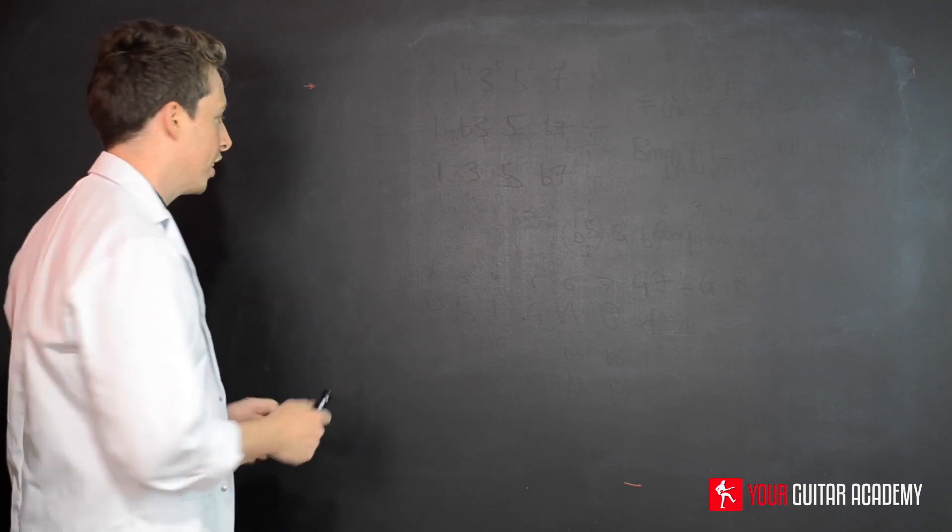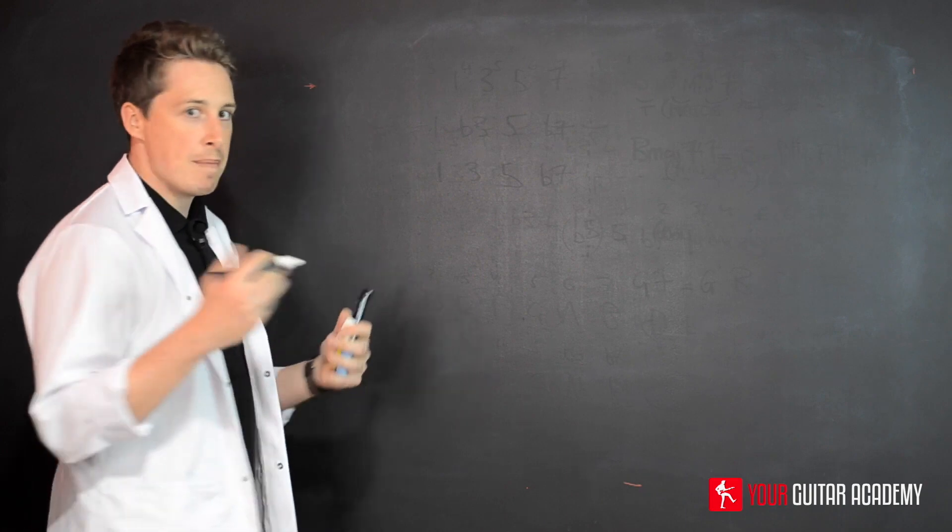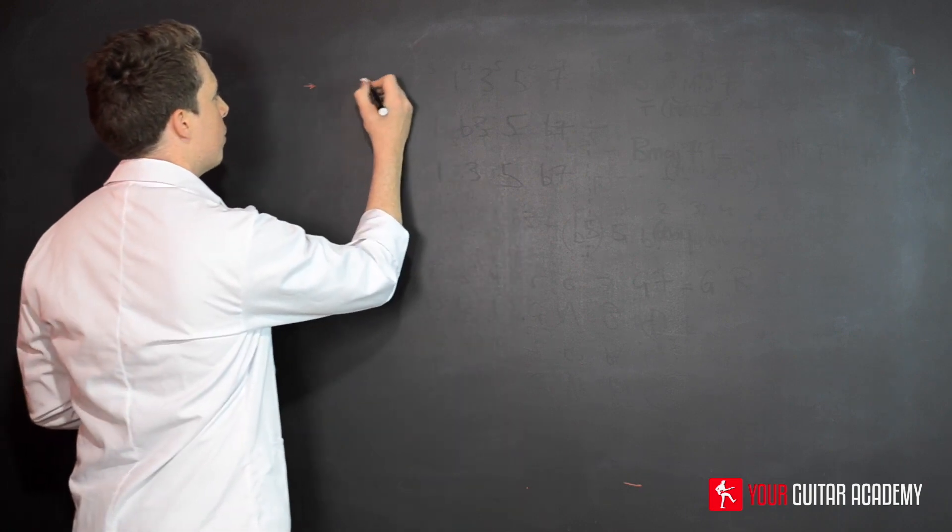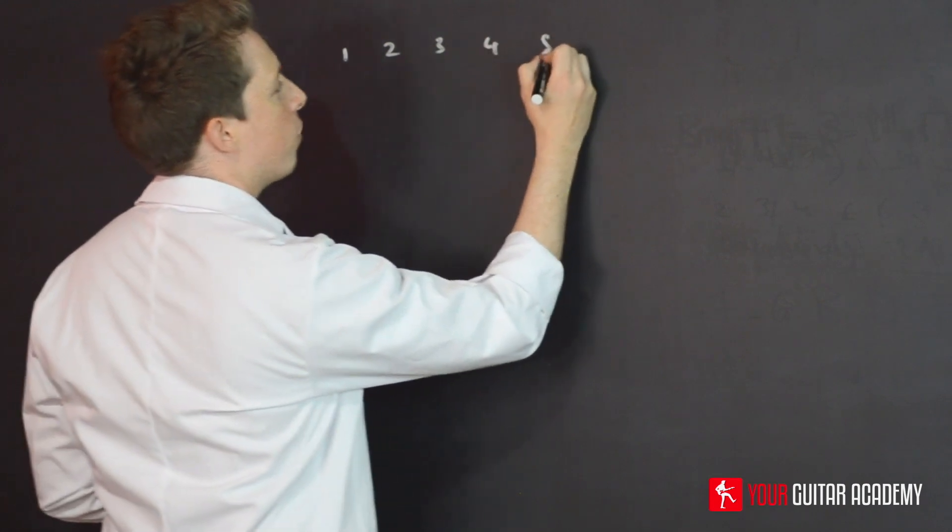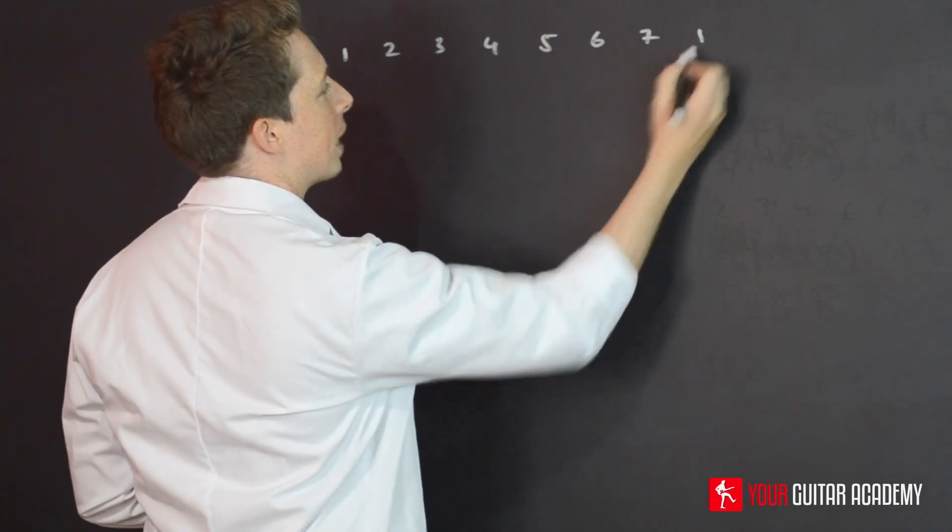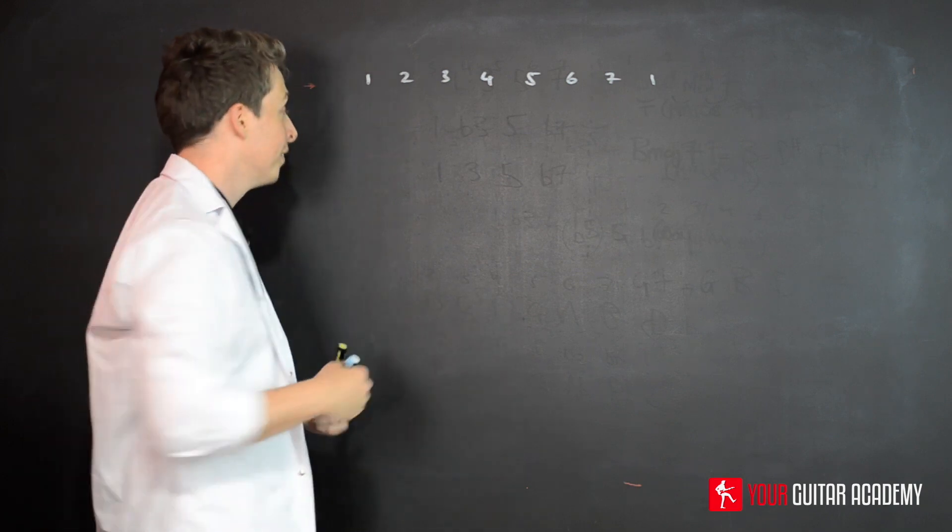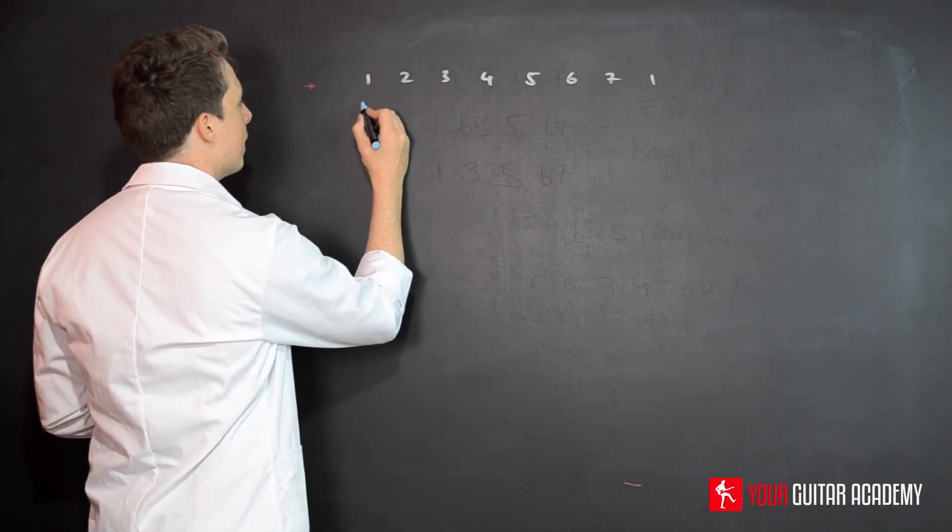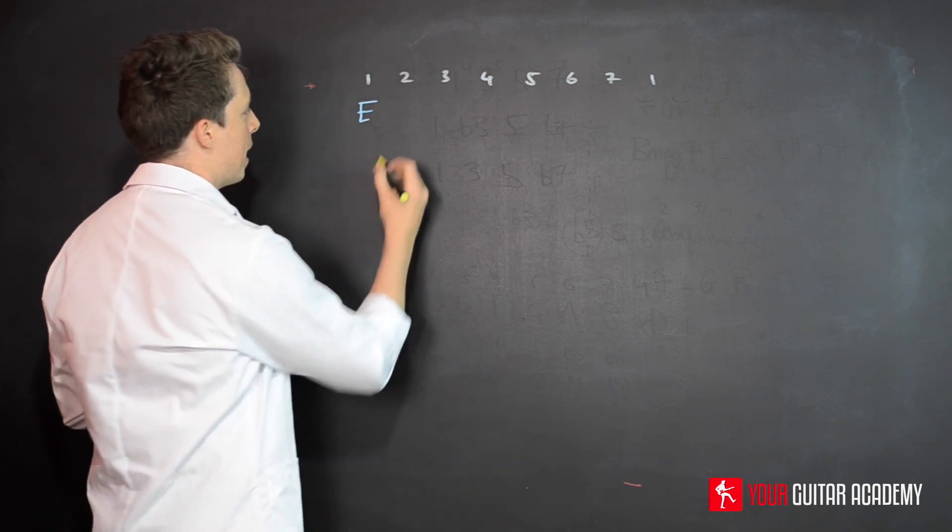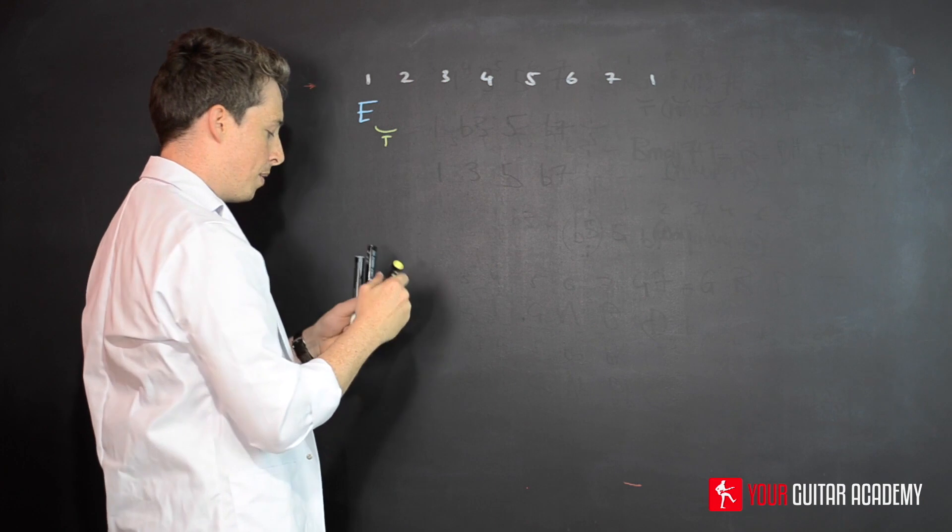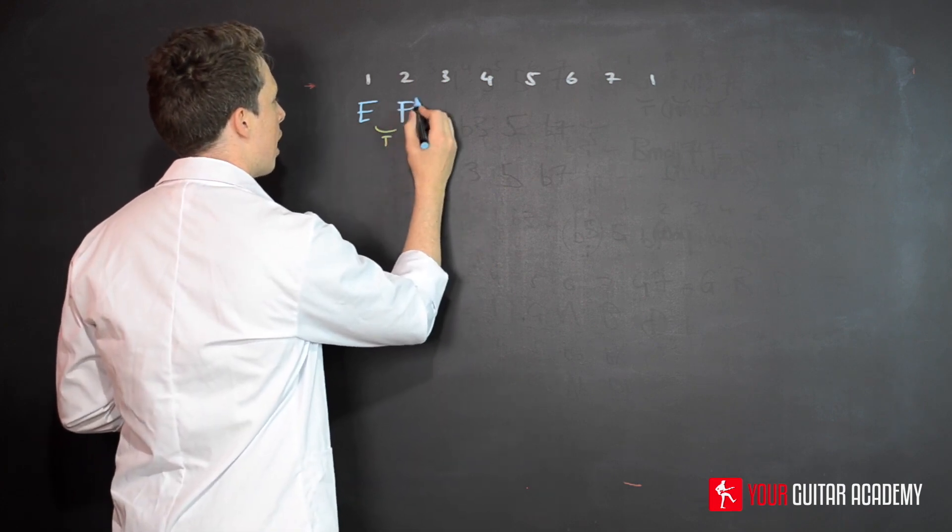I'm going to work this through. Remember with the major scale, we just simply use the numbers at the top: 1, 2, 3, 4, 5, 6, 7, and then back to 1. Then we use our formula: tone, tone, semitone, tone, tone, tone, semitone. With E, there's our E, and we're going to be going a tone up from E. You guys should be able to do this just as quickly as I am, or if not quicker, which is F sharp.